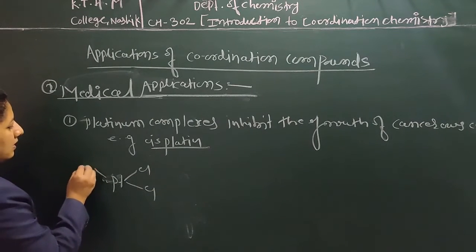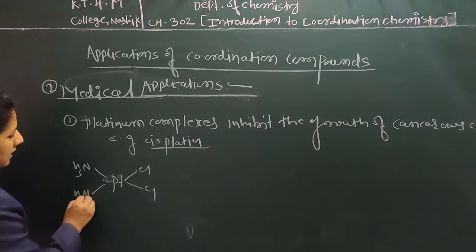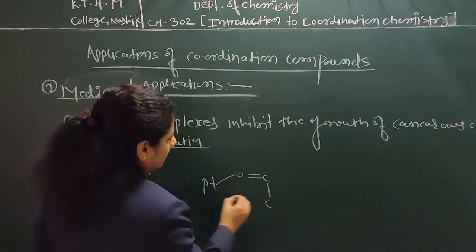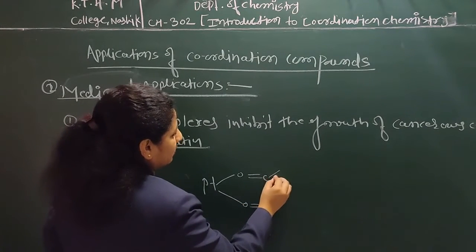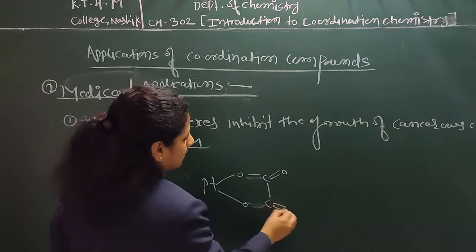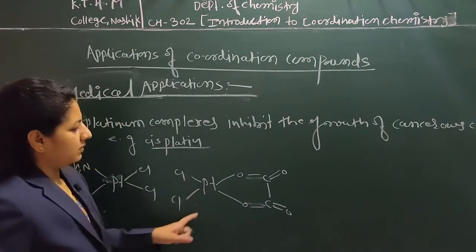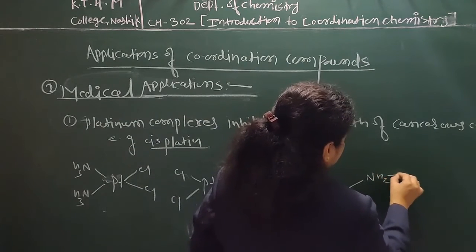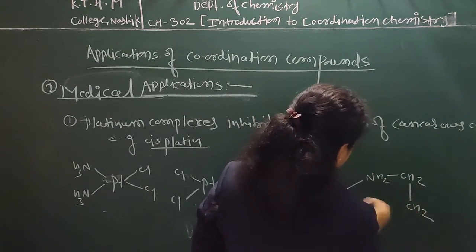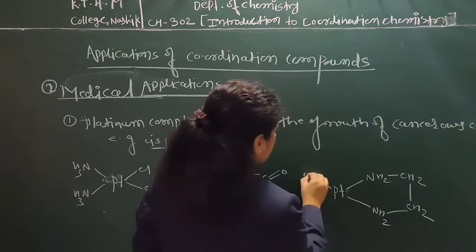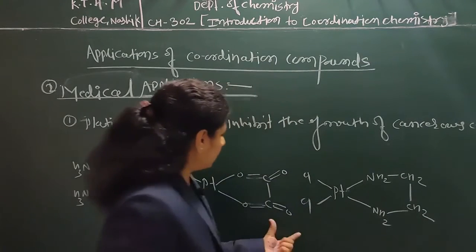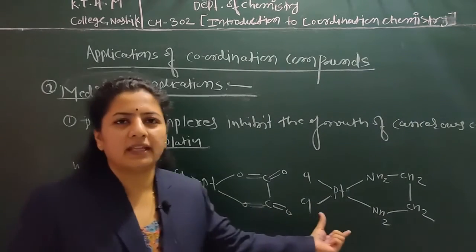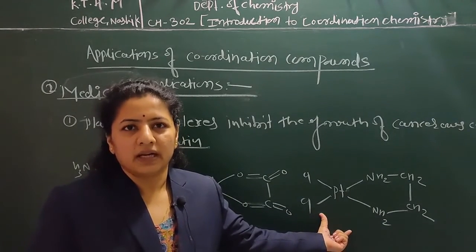The structure of cisplatin has NH₃ groups in cis position. Various platinum complexes in cis position are effectively used in medical applications. These various platinum complexes which are majorly in cis position only form very wide applications in the medical field.